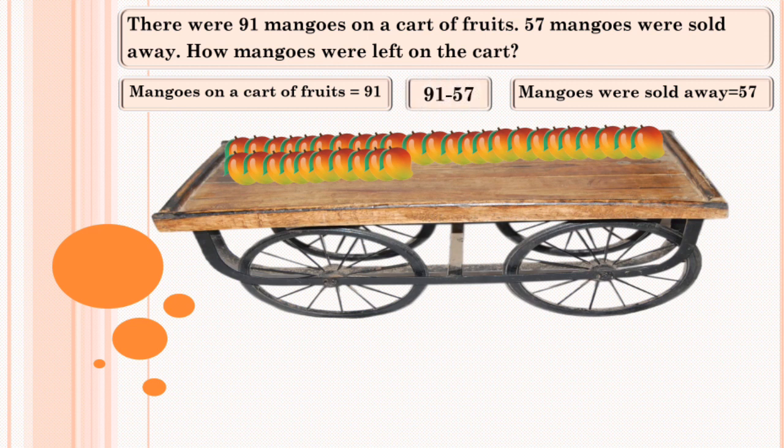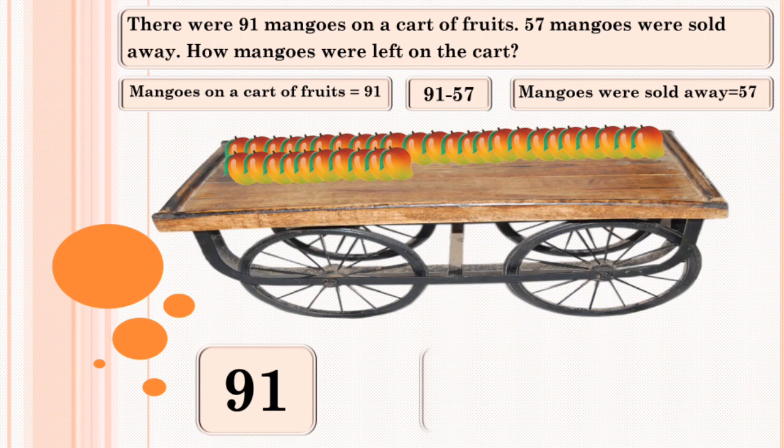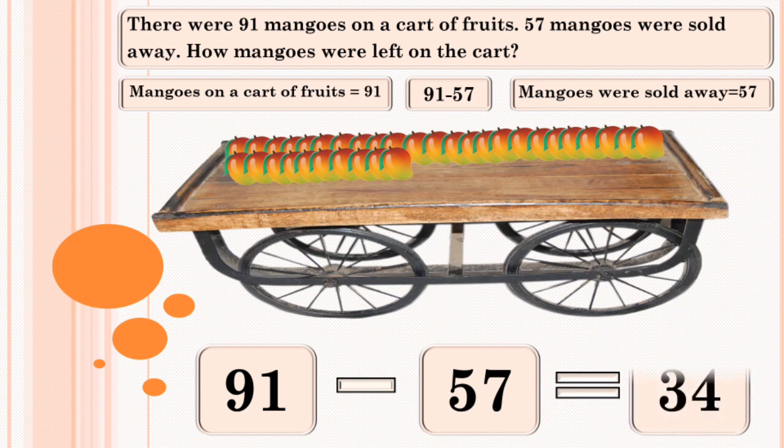Mangoes on a cart of fruits equals 91. Mangoes sold away equals 57. 91 minus 57 equals 34. 34 mangoes were left on the cart.